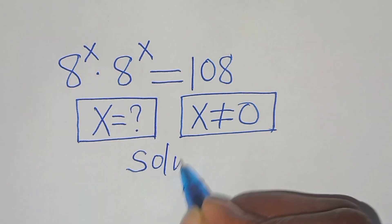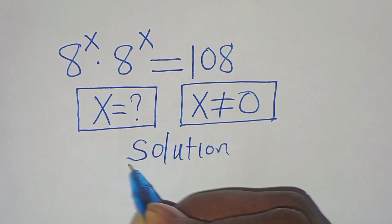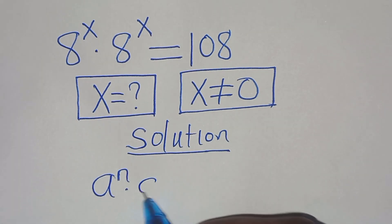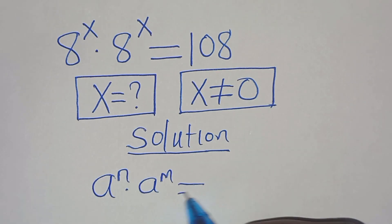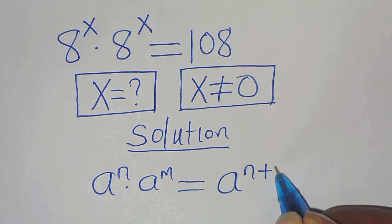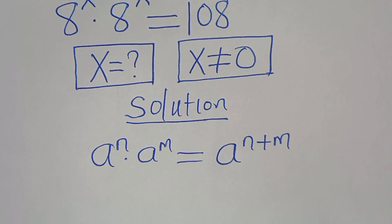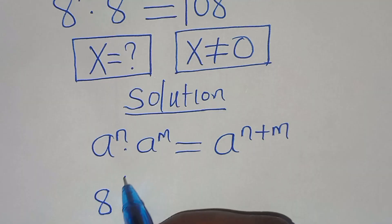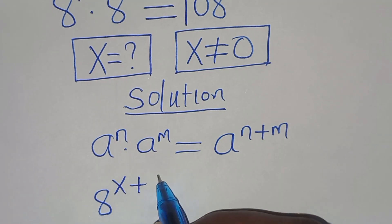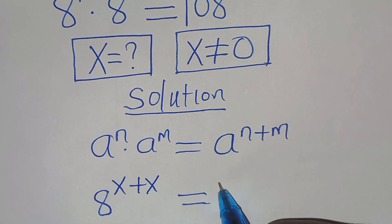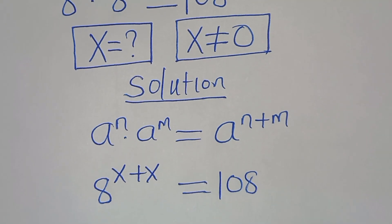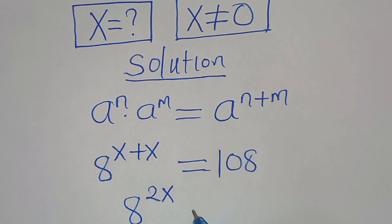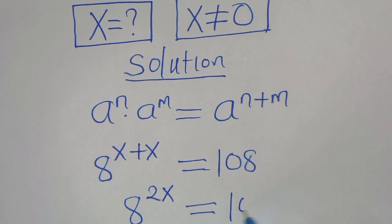Let's present a solution from here. This exponential equation is in the form of 8 to the power of n times 8 to the power of m, which we can express as 8 to the power of n plus m. Applying this exponent property, then here we have 8 to the power of x plus x, this is equal to 1/8. So here we have 8 to the power of 2x, this is equal to 1/8.